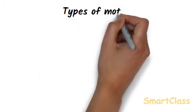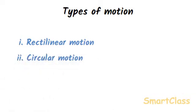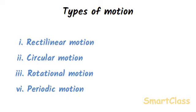Types of motion. The motion of all the objects are not of the same type. Different objects show different types of motions. Some of the important types of motions are Rectilinear motion, Circular motion, Rotational motion and Periodic motion. Let us discuss all these types of motions in detail one by one.